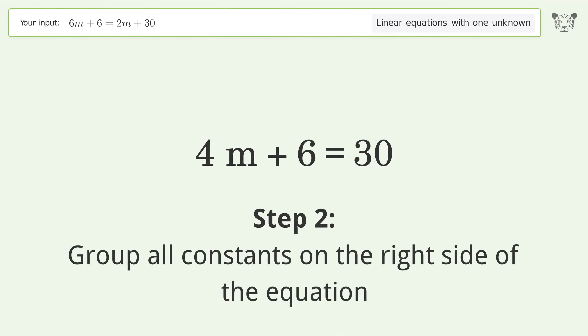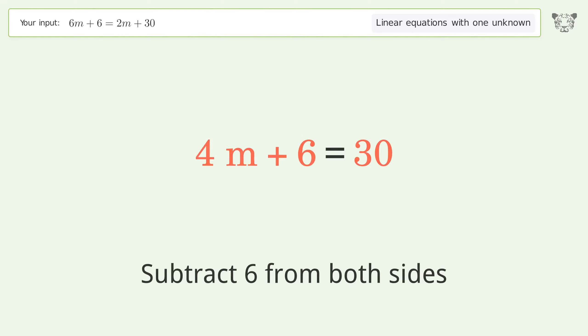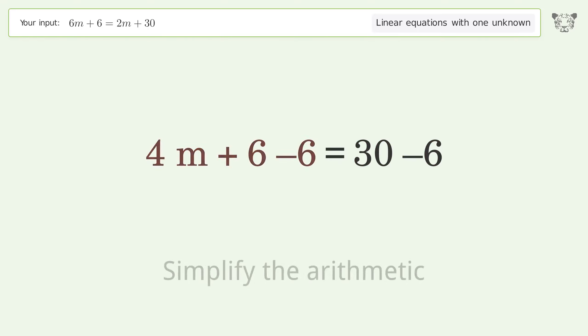Group all constants on the right side of the equation. Subtract 6 from both sides. Simplify the arithmetic.